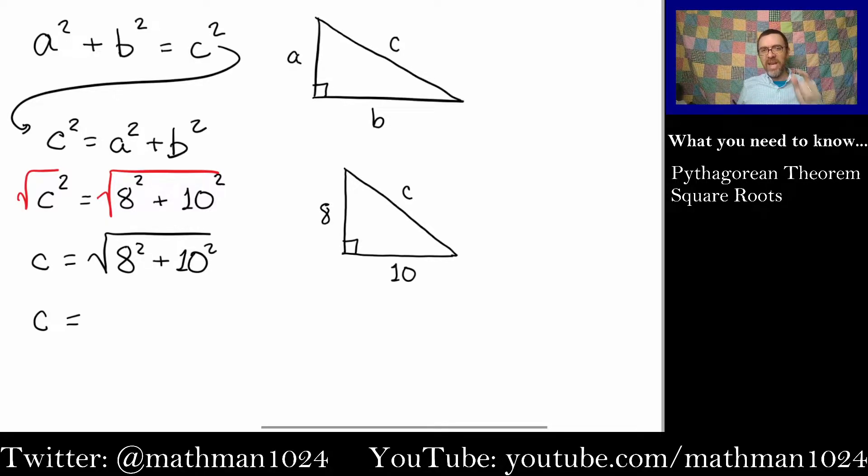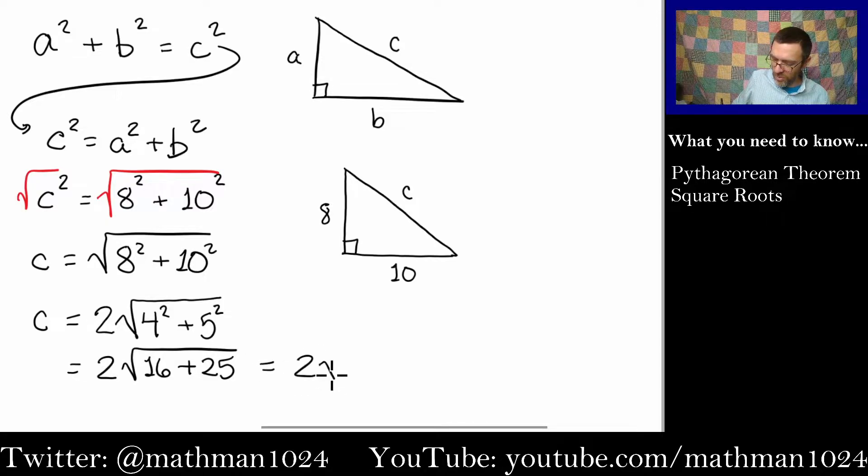So here is a little nice simplifying hack that you can do when you have radicals. Take that common factor between 8 and 10, which is 2, and you can slide that guy outside the radical like that, turning this into 4 squared and 5 squared. I'm going to show you why this works in just a moment, but let's go ahead and finish simplifying this. So this gives me 2 times the square root of 16 plus 25, which gives us 2 times the square root of 41. That's pretty cool. 41 can't be broken down anymore, so we're done simplifying. We're able to simplify before we even squared anything.